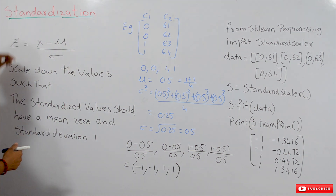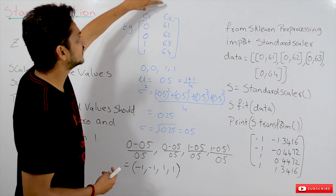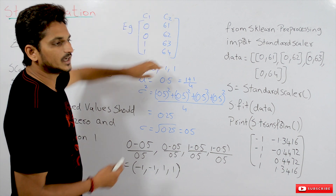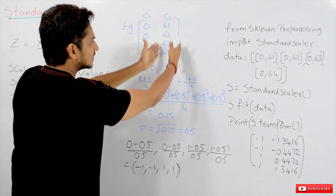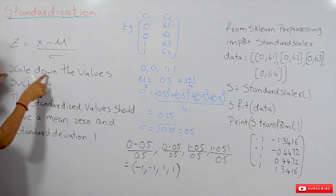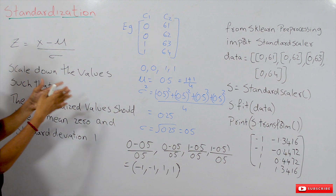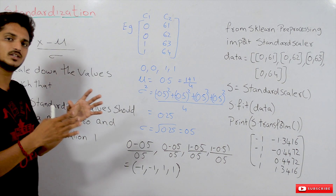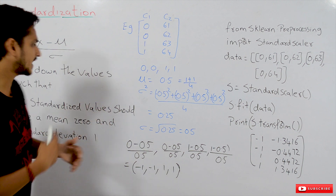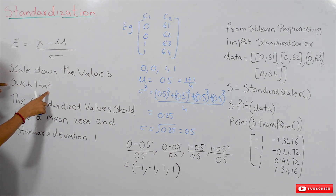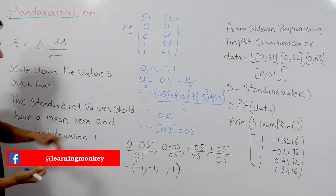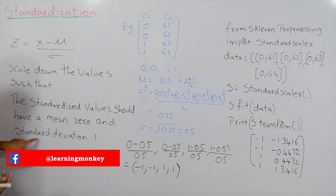What standardization means: let's take a dataset with two columns, C1 and C2. C1 has values 0, 0, 1, 1 and C2 has values 61, 62, 63, and 64. Standardization will take a column and scale down the values such that the new standardized values should have a mean of 0 and a standard deviation of 1.